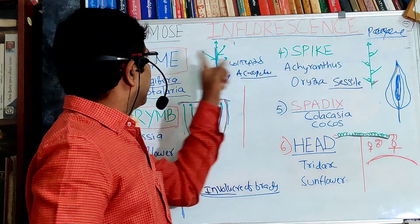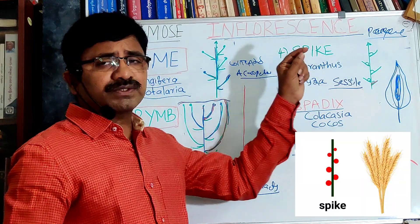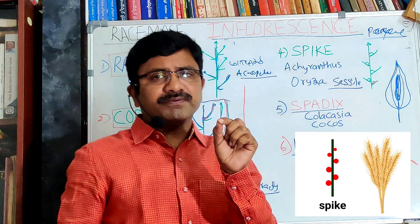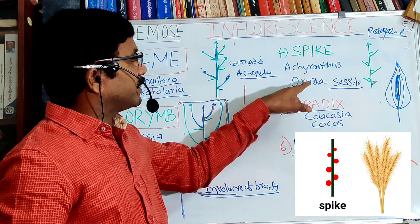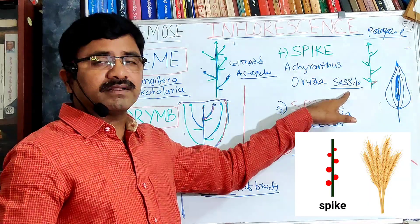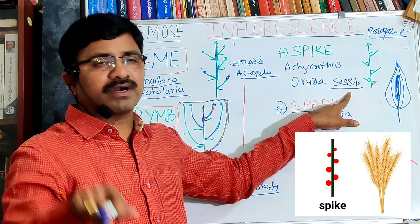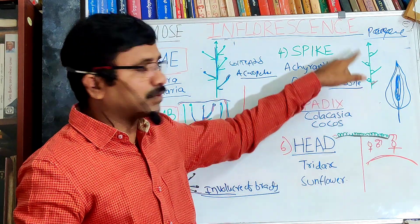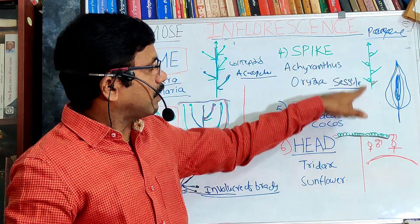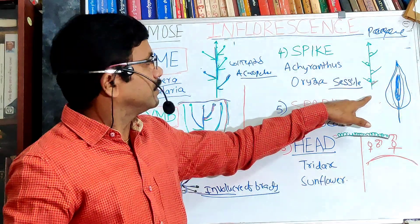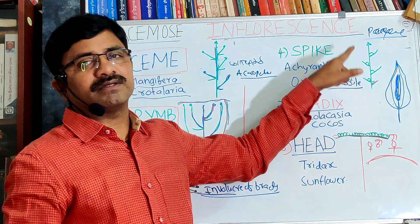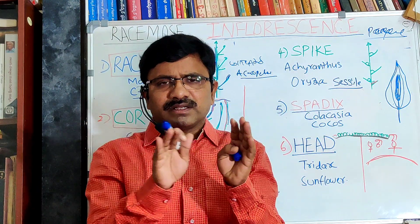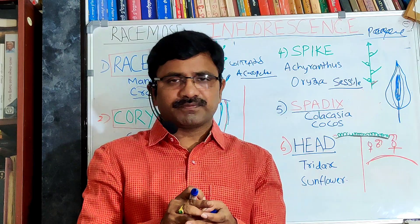The fourth type is spike. Raceme and spike show almost the same characters, but the important difference is that in spike, the flowers are sessile — they do not show any kind of stalk. Sessile flowers are arranged in an acropetal manner and all flowers are bracteate. Spike is the characteristic inflorescence of the Poaceae family, which includes all cereal and grain-yielding plants. Examples include Achyranthes aspera and Oryza sativa (paddy).